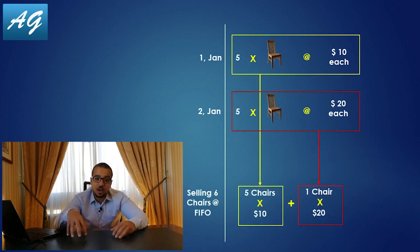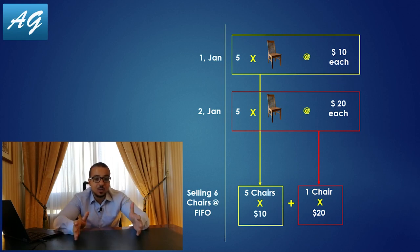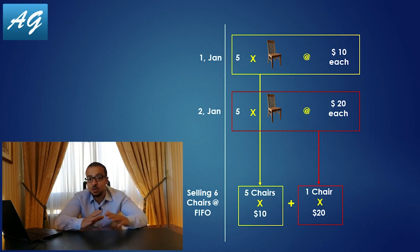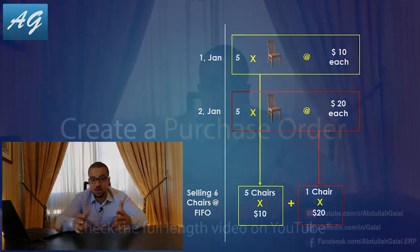Five units are going to be multiplied by 10 USD and the last unit is going to be multiplied by 20. This is an inventory valuation method, so it is only going to impact our accounting records, but it is not related at all to how we physically treat these stocks in our warehouse.